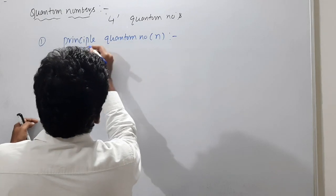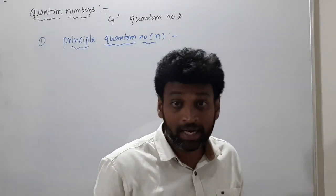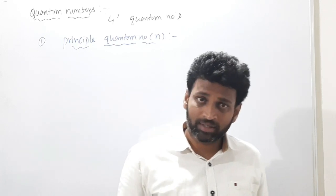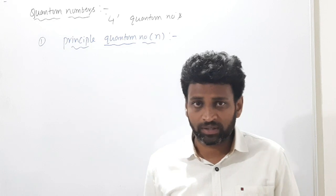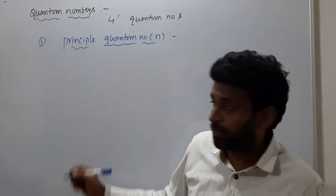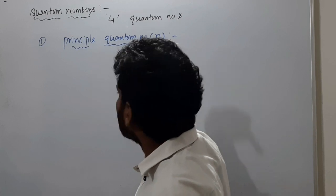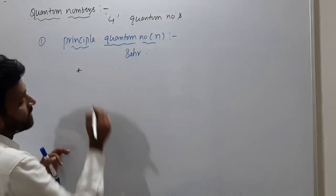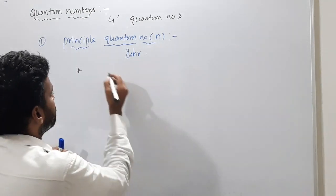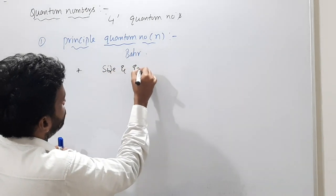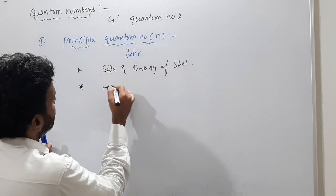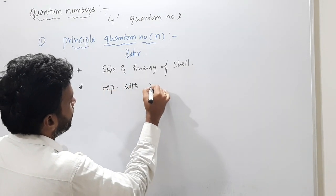We will discuss first the principal quantum number, represented by n. We are learning this to understand where a particular electron is, how many electrons are in a shell, how many degenerate electrons there are, and what the energy of the shell is. All of this can be understood through the principal quantum number.